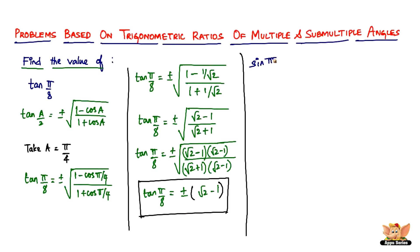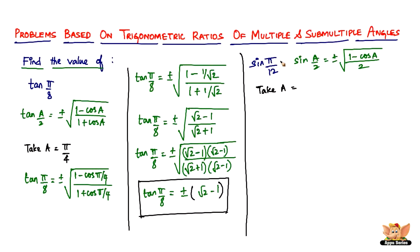Now let's find sin(π/12). No matter what the angle is, we go to the formula for sin(a/2), which equals plus or minus the square root of (1 minus cos a) divided by 2. Here we take a = π/6 to make it π/12. So sin(π/12) equals plus or minus the square root of (1 minus cos(π/6)) divided by 2.